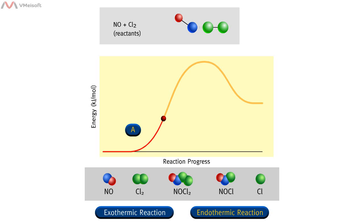As the two molecules approach each other, an attractive force begins to form between the nitrogen of nitrogen monoxide and one of the chlorines of the chlorine molecules. This attraction is indicated by the dashed line. The bond between the chlorines begins to weaken, and the bond length increases.